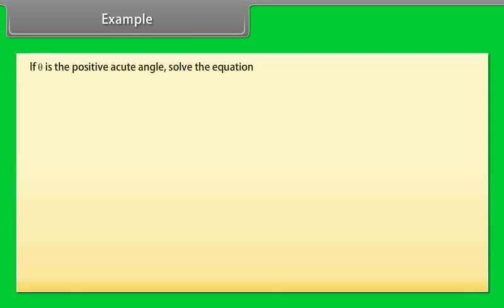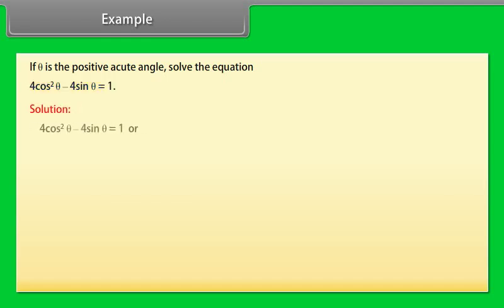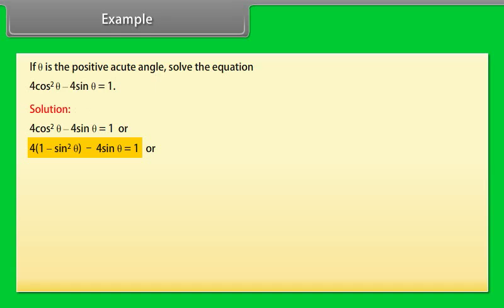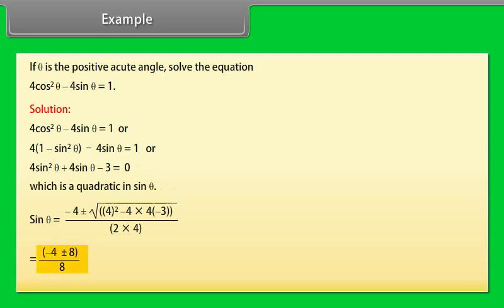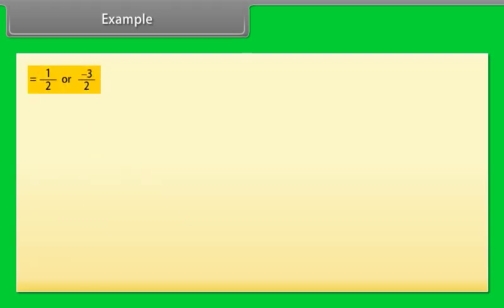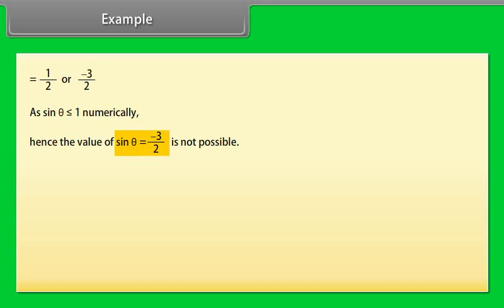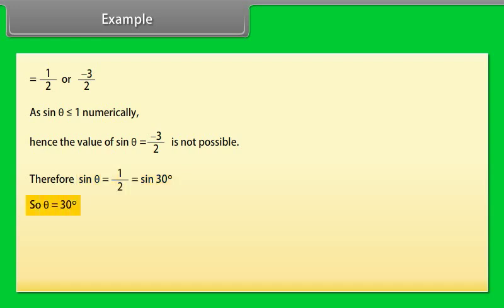Example: If θ is a positive acute angle, solve 4cos²θ − 4sinθ = 1. Solution: 4cos²θ − 4sinθ = 1 → 4(1 − sin²θ) − 4sinθ = 1 → 4sin²θ + 4sinθ − 3 = 0, which is a quadratic in sinθ. Using the quadratic formula: sinθ = (−4 ± √(16 + 48))/8 = (−4 ± 8)/8, giving sinθ = 1/2 or sinθ = −3/2. Since |sinθ| ≤ 1, sinθ = −3/2 is not possible. Therefore sinθ = 1/2 = sin 30°, so θ = 30 degrees.